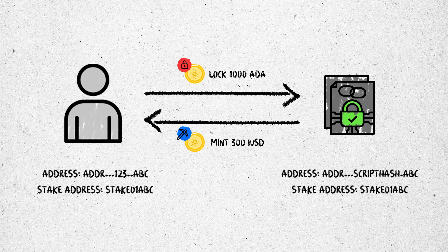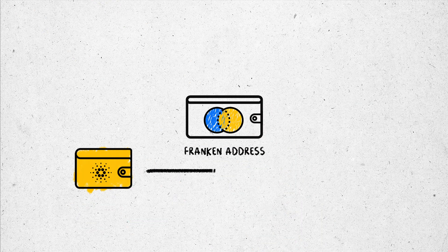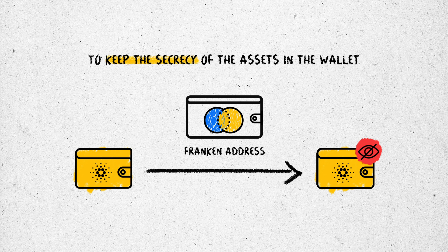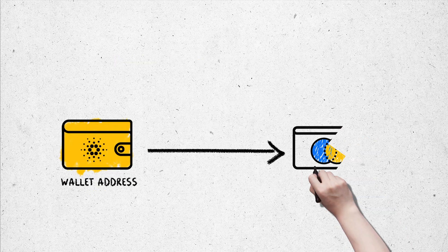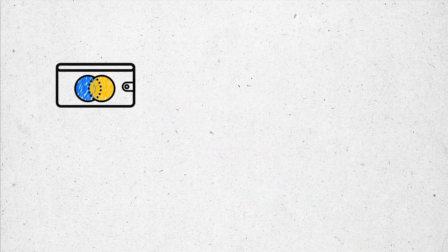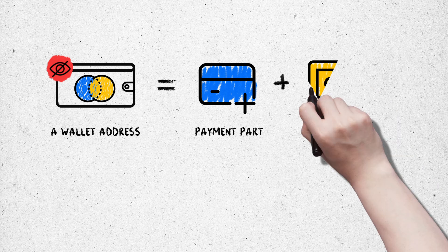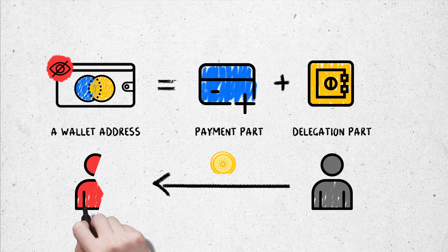With staking control plus 1000 ADA, if the asset locked in the smart contract gets liquidated, the balance will also disappear. Besides, the Franken address can be used as a way to keep the secrecy of assets in a wallet. Any user can create a hybrid address to send money without exposing their main address, by transferring money to a hybrid address containing the payment part and staking part belonging to another wallet.